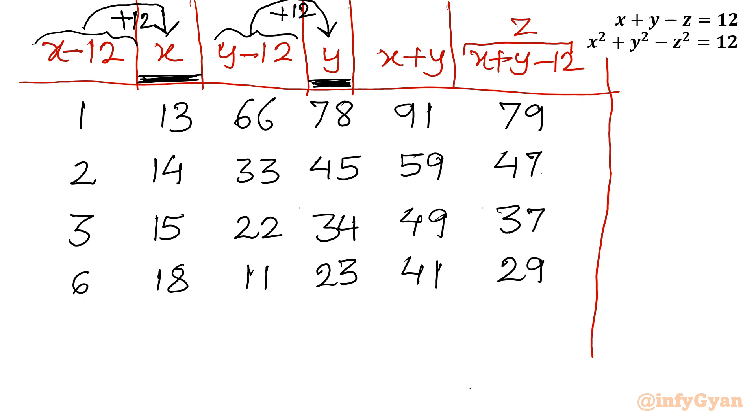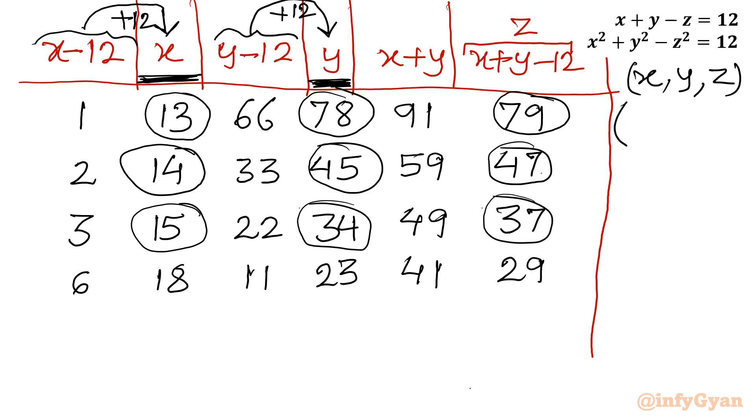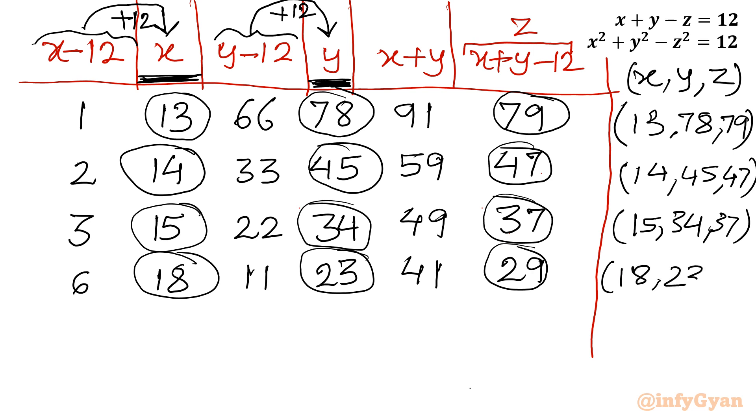So our x comma y comma z triplet values are 13, 78, 79; 14, 45, 47; 15, 34, 37; and 18, 23, 29. So let us write: 13, 78, 79. Second set: 14, 45, 47. Third set: 15, 34, 37. And last set: 18, 23, and 29.